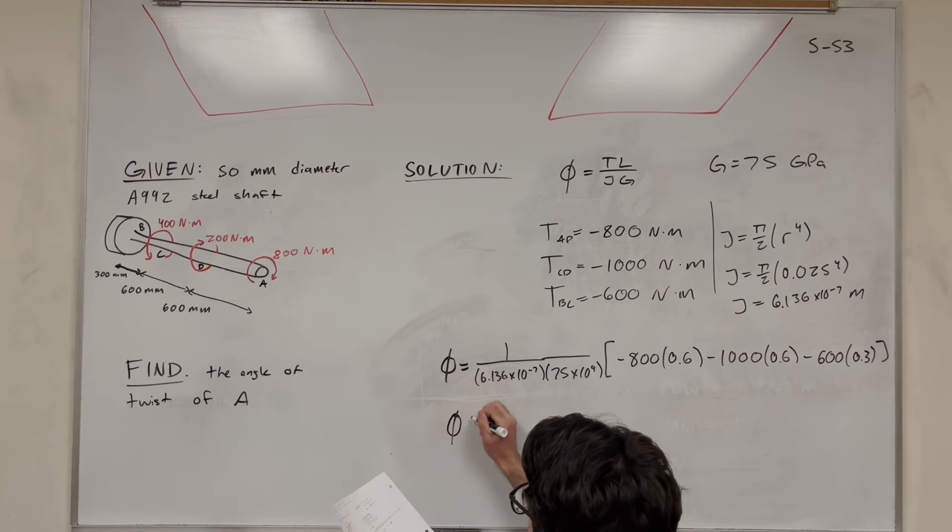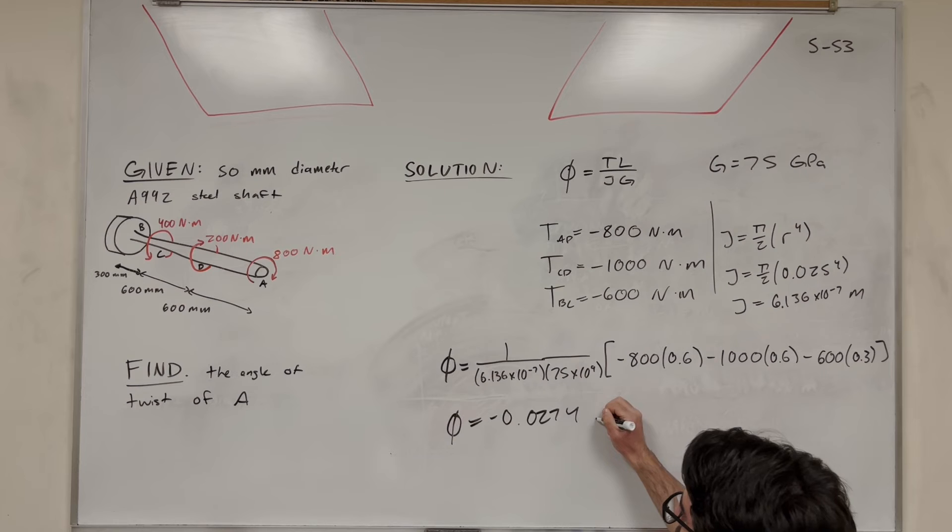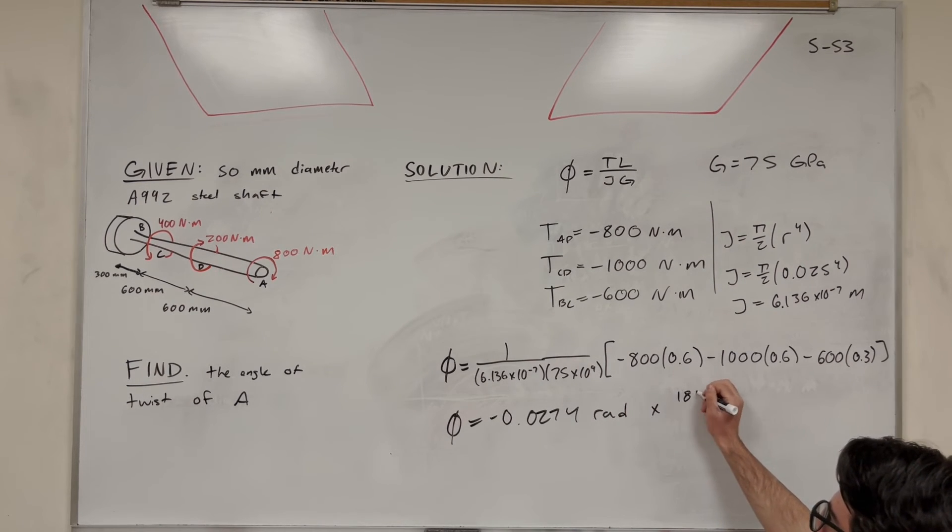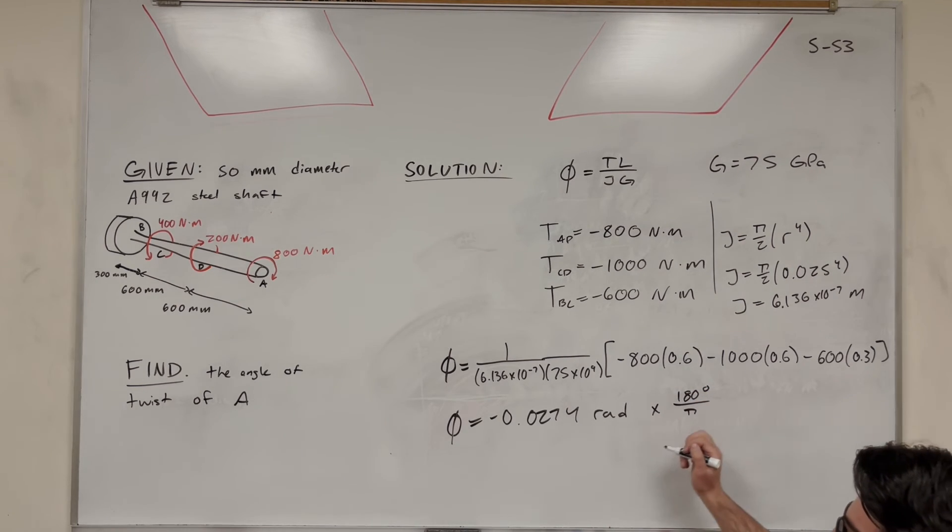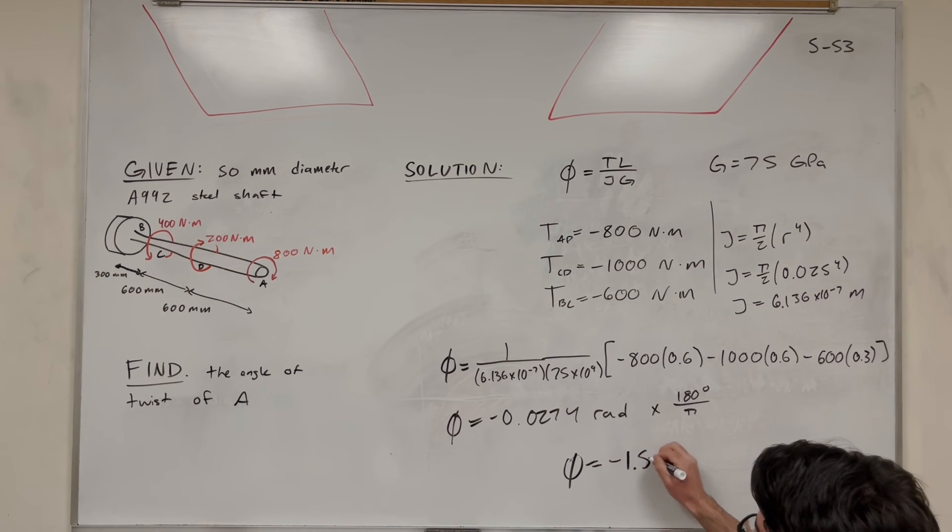So then you're going to get that curvature is negative 0.0274. But this is in radians. So if you want to convert from radians to degrees, we're going to need to multiply by 180 over pi. Because 180 degrees is equal to pi radians. So you do that, you get this as negative 1.57 degrees.